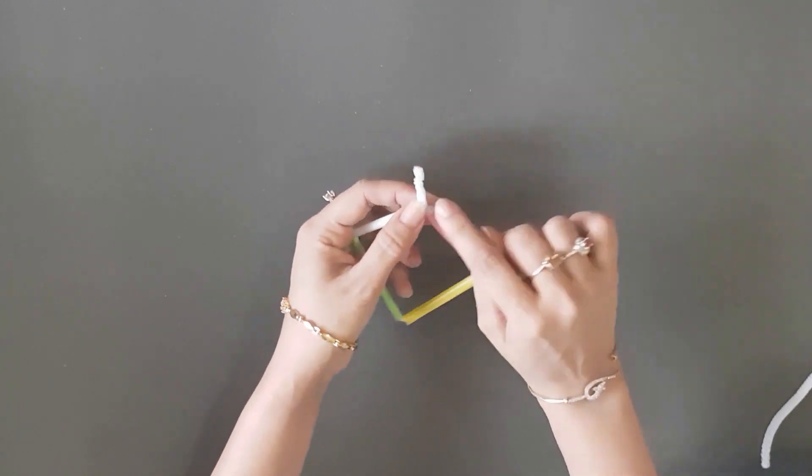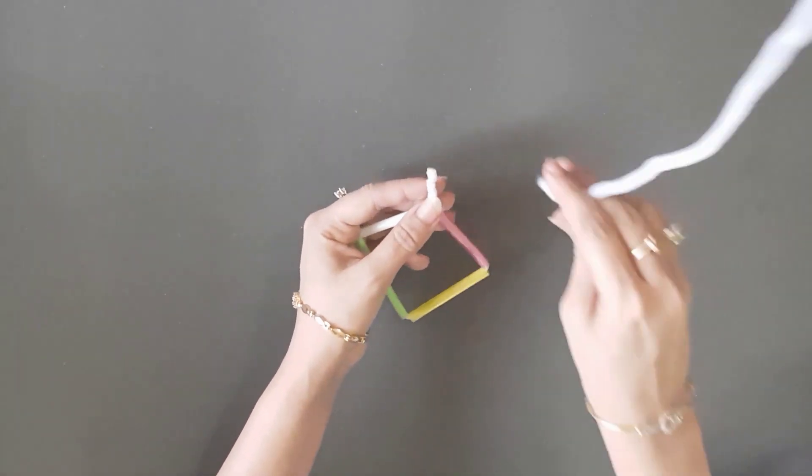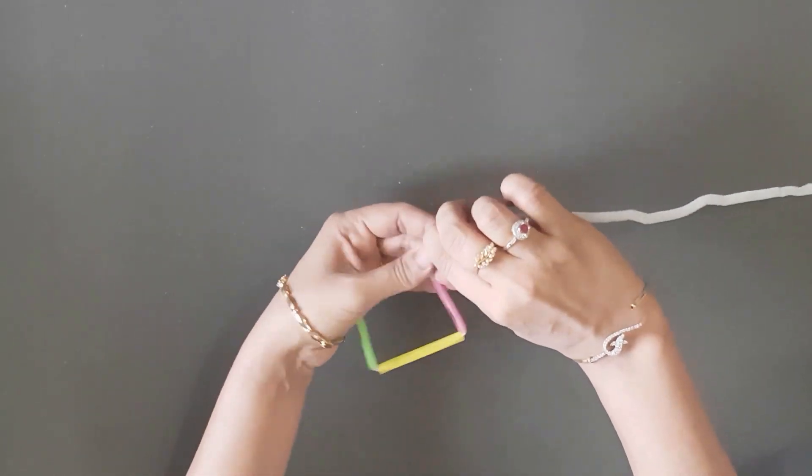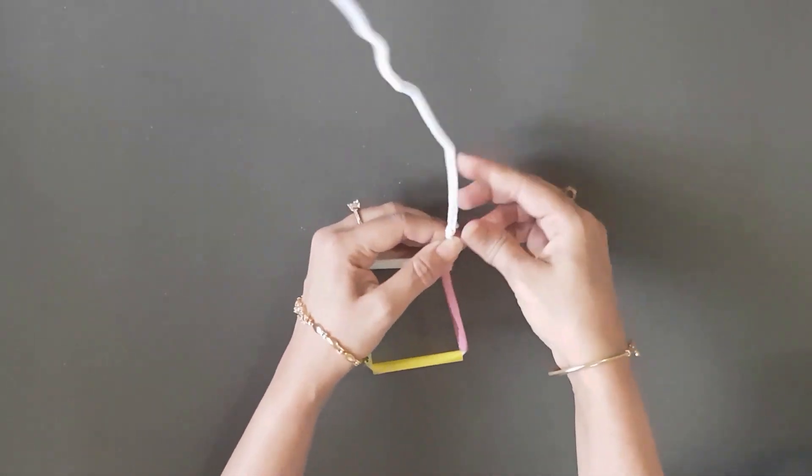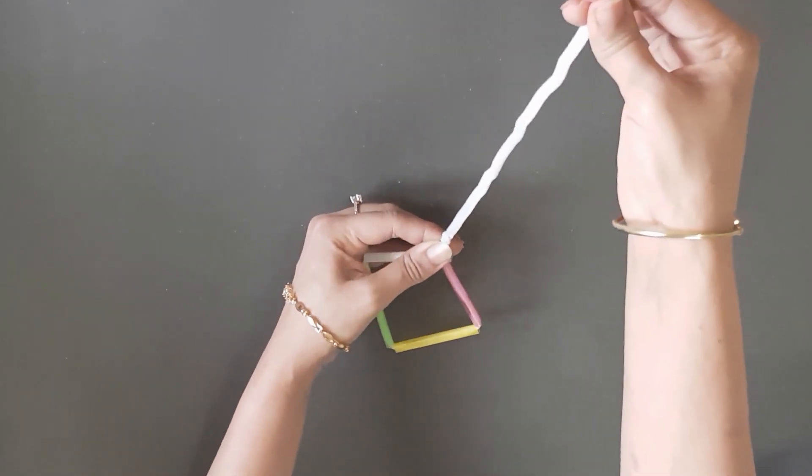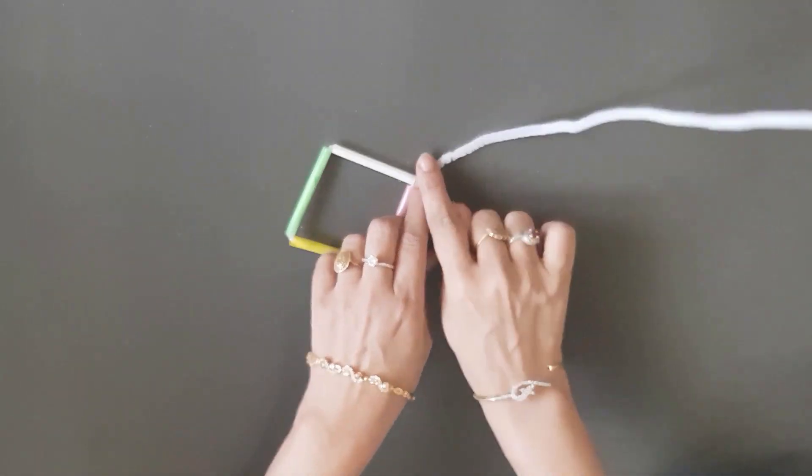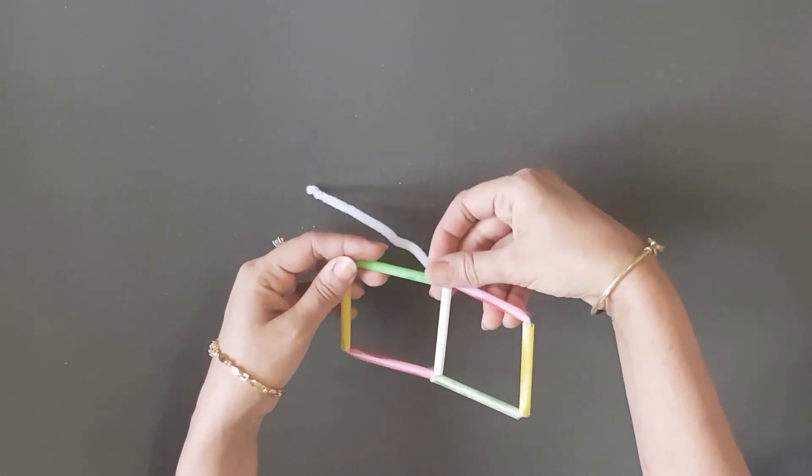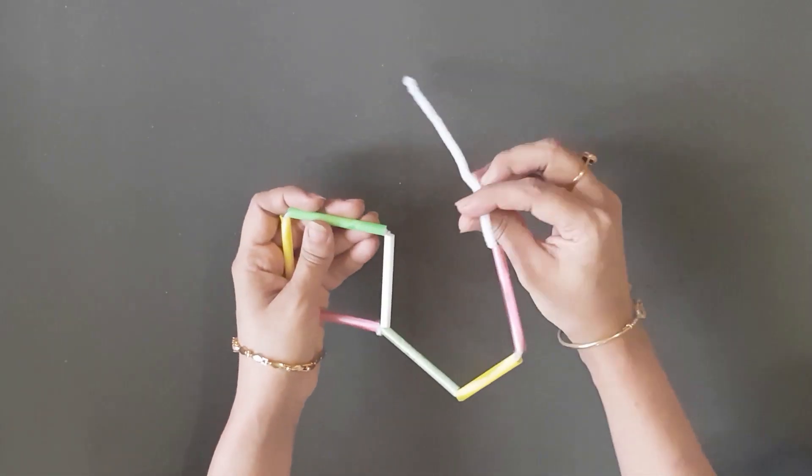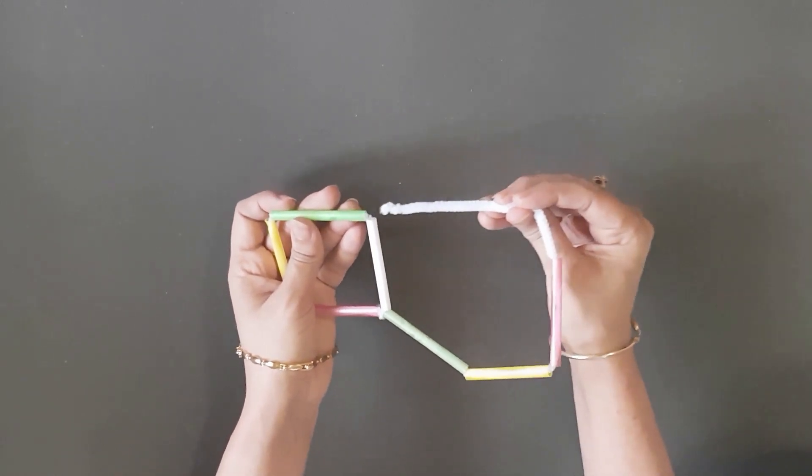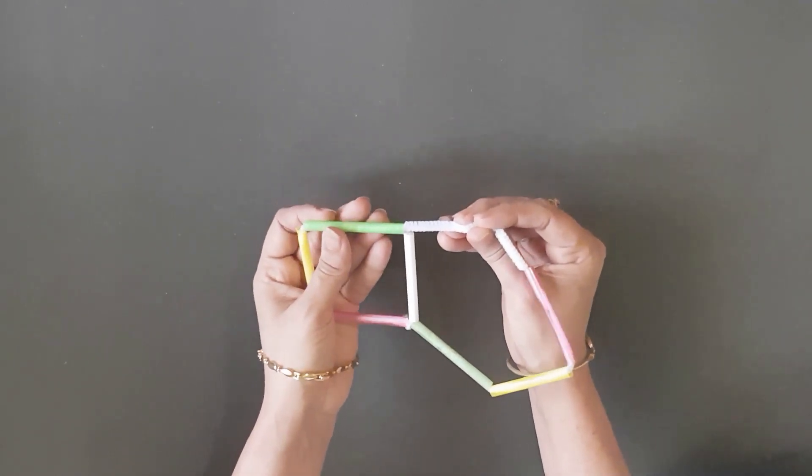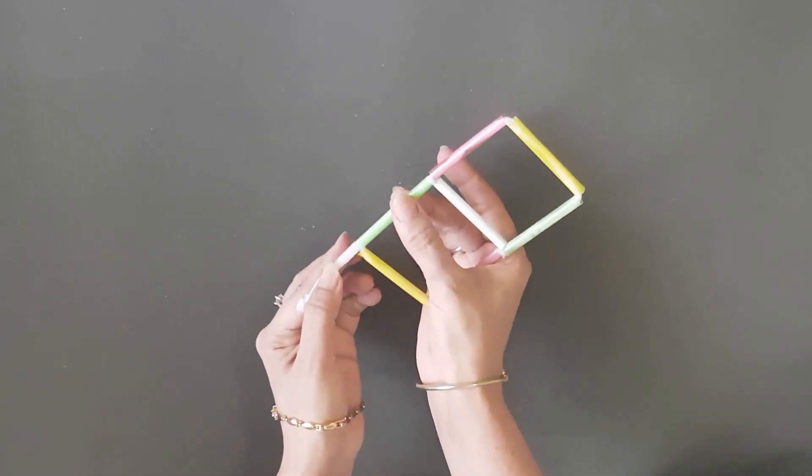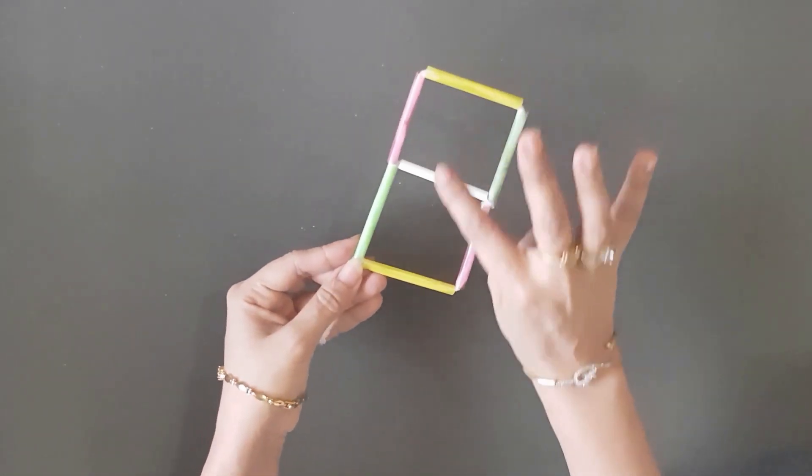Now you will be needing another pipe cleaner. So we are going to join another new pipe cleaner and twist it like this. So now we have a longer side. You are going to put three more straws inside. Now you need to bend it again. And now you need to insert this pipe cleaner inside this straw so that it comes out from the other end. And now we have two squares.